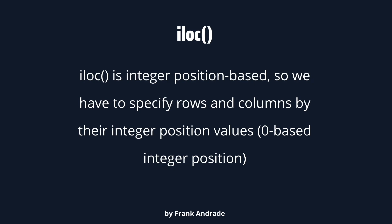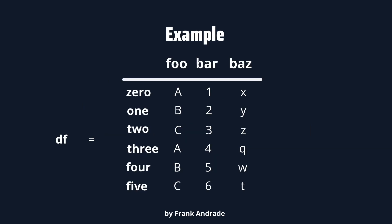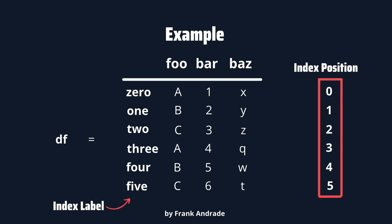Now to understand this better, let's see an example. Here we have a DataFrame named df with three columns — foo, bar, and baz — and six indexes. The first index is zero and the last one is five. The values 0, 1, 2, 3, 4, and 5 on the left are the index labels. On the right, we can see the index position of each element. I wrote the index names using letters rather than numbers on purpose, to show the difference between index label and index position. The index label is the actual name you see in the index — it can be words or numbers — but the index position can only be numbers and always starts with zero.